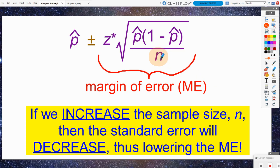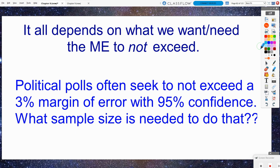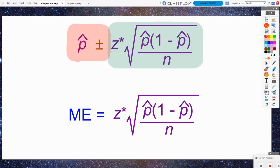So now we're going to talk about how big of a sample size do we need? It all depends on what we want or need the margin of error to really not exceed. And what I mean by that is an example like this. Political polls often seek to not exceed a 3% margin of error. Oftentimes, especially near election time, they'll say we took a poll and this percent of people wanted to vote for this candidate and this percentage for this candidate. And then usually down at the bottom in very fine print, it'll say the margin of error was plus or minus 3%. So if we want the margin of error to not be any bigger than 3% and we want to maintain 95% confidence, then what sample size are we going to need to achieve that?